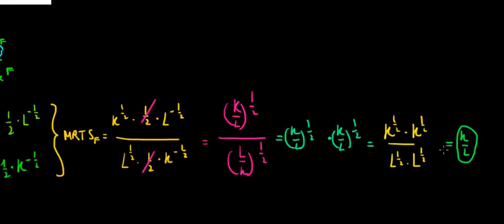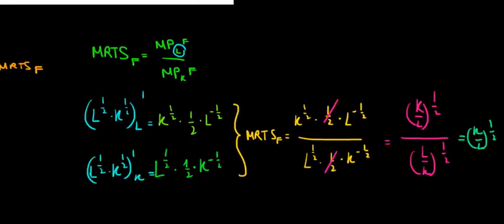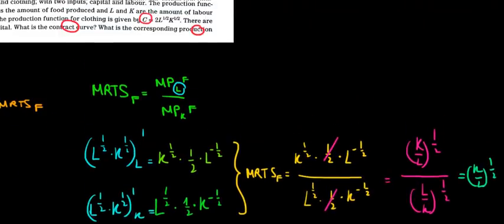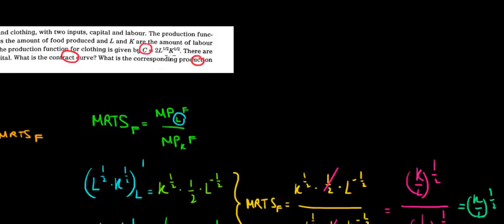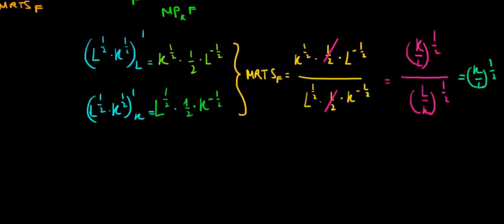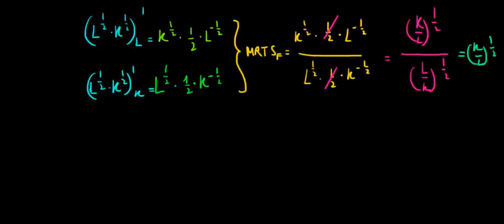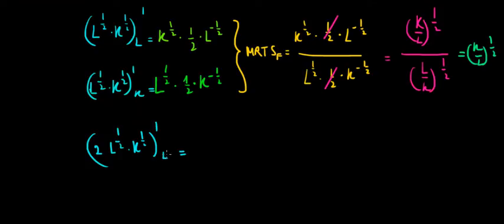With the same logic, let's calculate the MRTS for clothing production. The clothing production function is 2L to the power 1/2 times K to the power 1/2. Differentiating with respect to labor first: 2 times K to the power 1/2 is the constant, and differentiating L^(1/2) gives 1/2 times L to the power minus 1/2. The 2 and 1/2 cancel, giving K to the power 1/2 times L to the power minus 1/2.